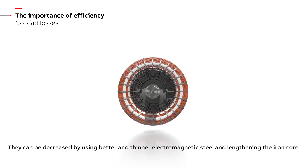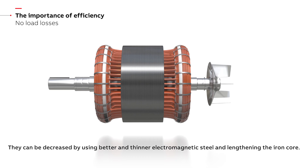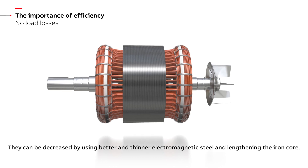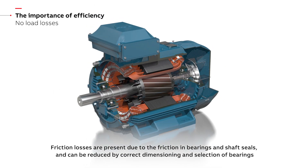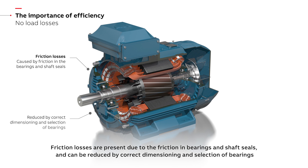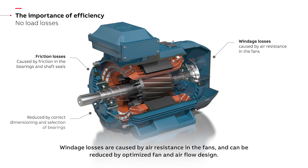Stator iron losses can be decreased by using better and thinner electromagnetic steel and lengthening the iron core. Friction losses are present due to friction in bearings and shaft seals, and can be reduced by correct dimensioning and selection of bearings. Windage losses are caused by air resistance in the fans and can be reduced by optimized fan and air flow design.